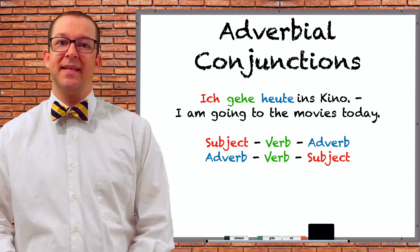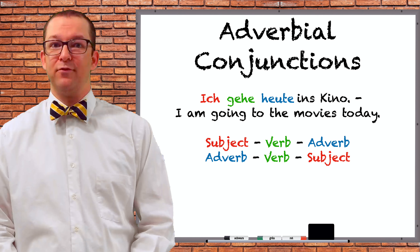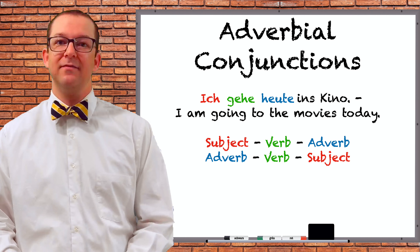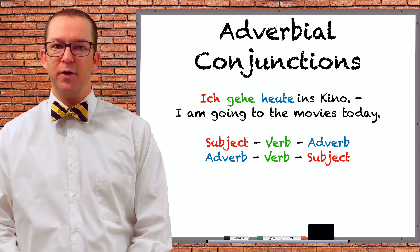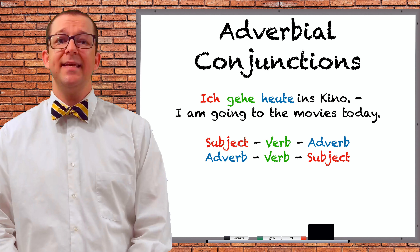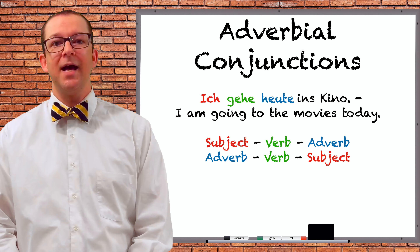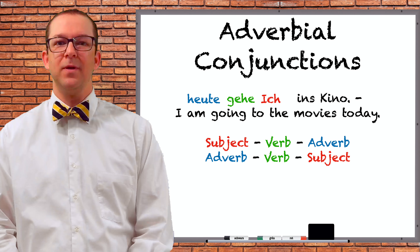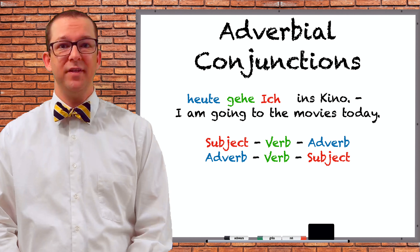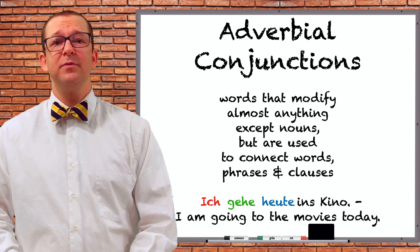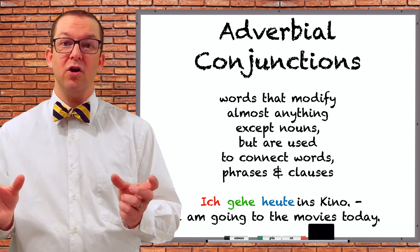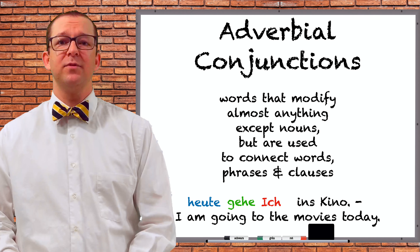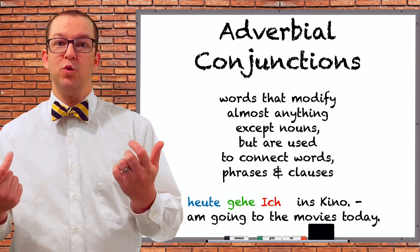With coordinating conjunctions, the word order is not affected at all. Subordinating conjunctions would require you to move the verb to the end of the clause — also not what happened here. With adverbial conjunctions, we simply start the clause with trotzdem and move the subject er to the other side of the verb, ist. This is the same thing that happens if you start any sentence with any other adverb — for example, Heute gehe ich ins Kino — Today I am going to the movie theater.